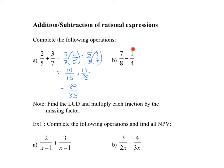Now subtracting fractions — same idea, the common denominator still applies. Here I'm going to examine the common denominator more closely by prime factoring. Instead of writing 8 and 4, I write 2 times 2 times 2 and 2 times 2.